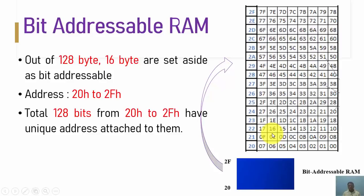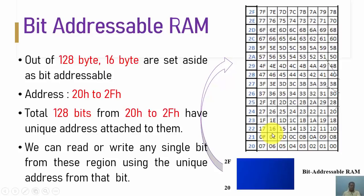For example, using a specific instruction, I can directly access only one bit present at memory location 44H. That is why it is called bit addressable RAM. We can read or write any single bit from this region using the unique address associated with that bit. For instance, to access the last bit location at 78H, I can directly execute or update the data present at that specific bit address.